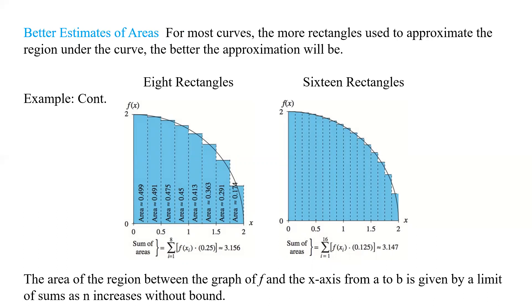So, here are the areas of the region between the graph of f and x-axis from a to b is given by the limit of sums as n increases without bounds. So again, if we went from 1 to 32 or 1 to 64.